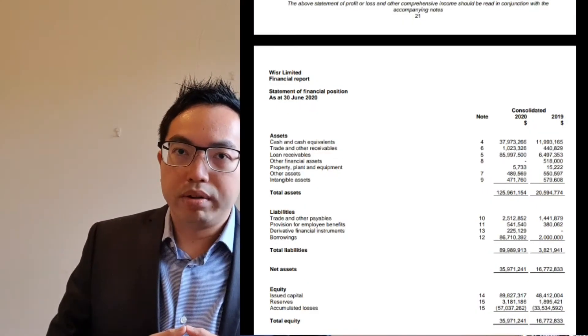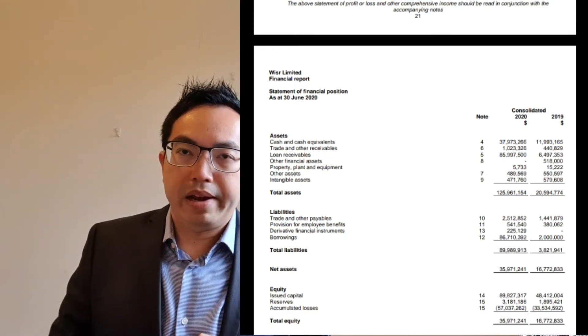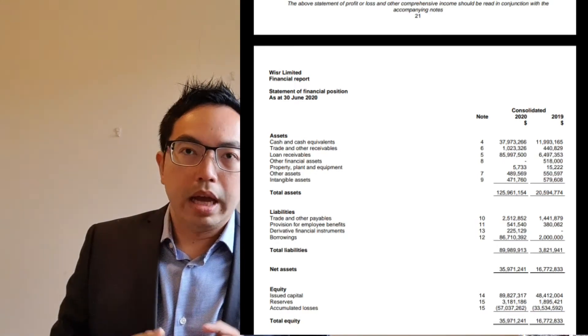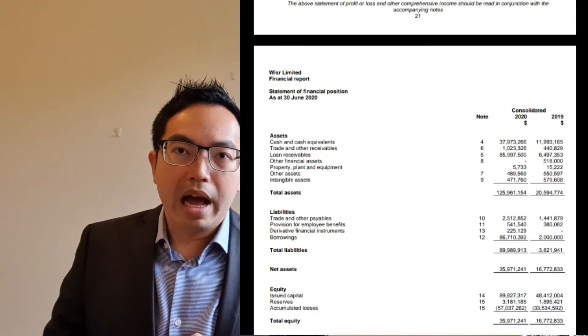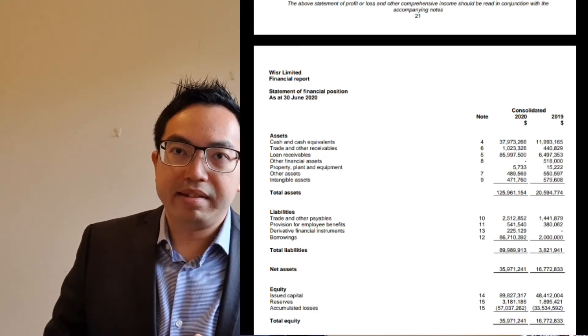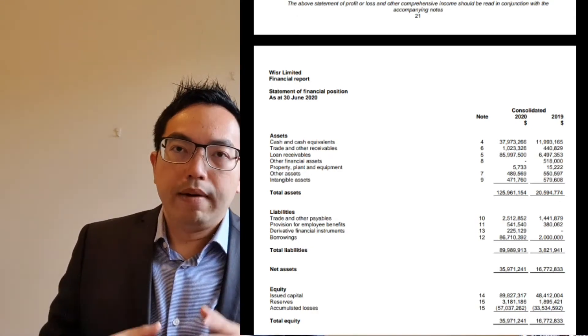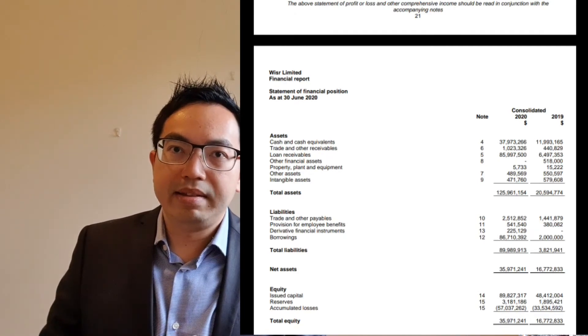Weiser's leverage is around 2.4 times at the end of June 2020. That is for every dollar of net asset, they have around $2.40 worth of loan book funded by their warehouse facility. I am excluding the off-balance sheet loan book because they don't take on the credit risk for this portion of their loan book. So I divided their $86 million warehouse funded loan book by the $36 million in net assets at the end of the financial year.